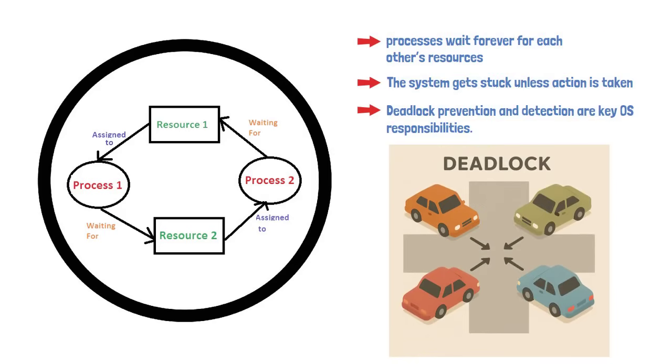Picture four cars at a four-way intersection, each wanting to go straight across but each having arrived at the same time. If all four drivers decide to wait for someone else to go first, they'll be stuck forever. That's a deadlock.